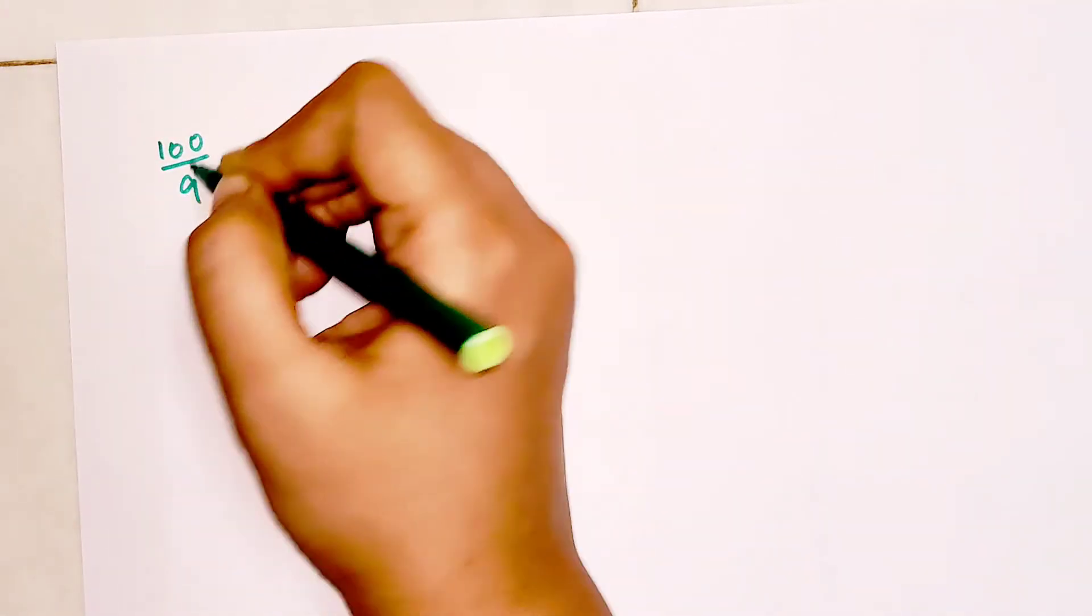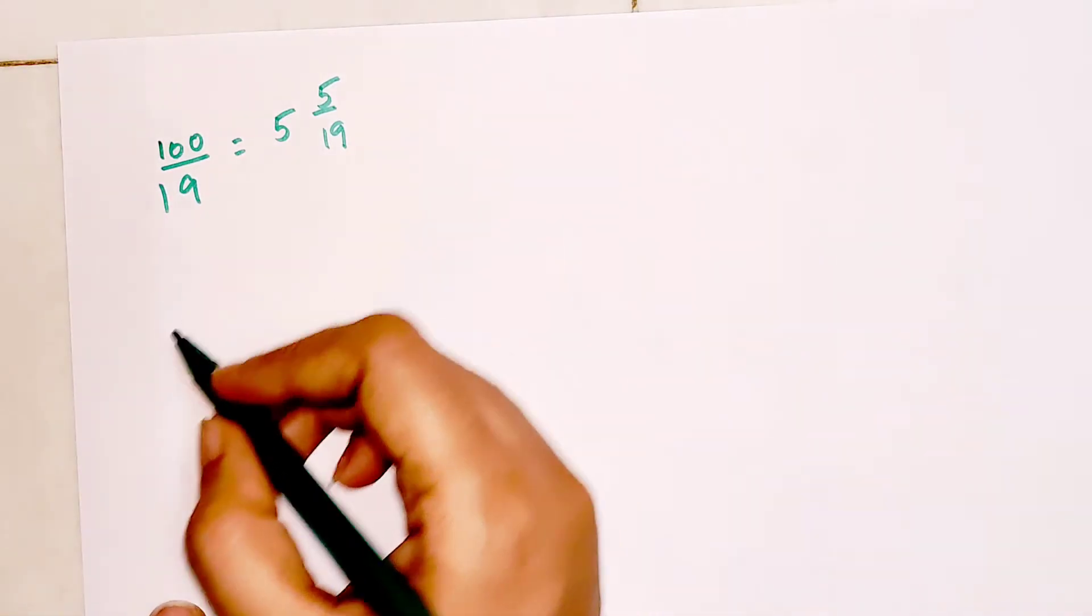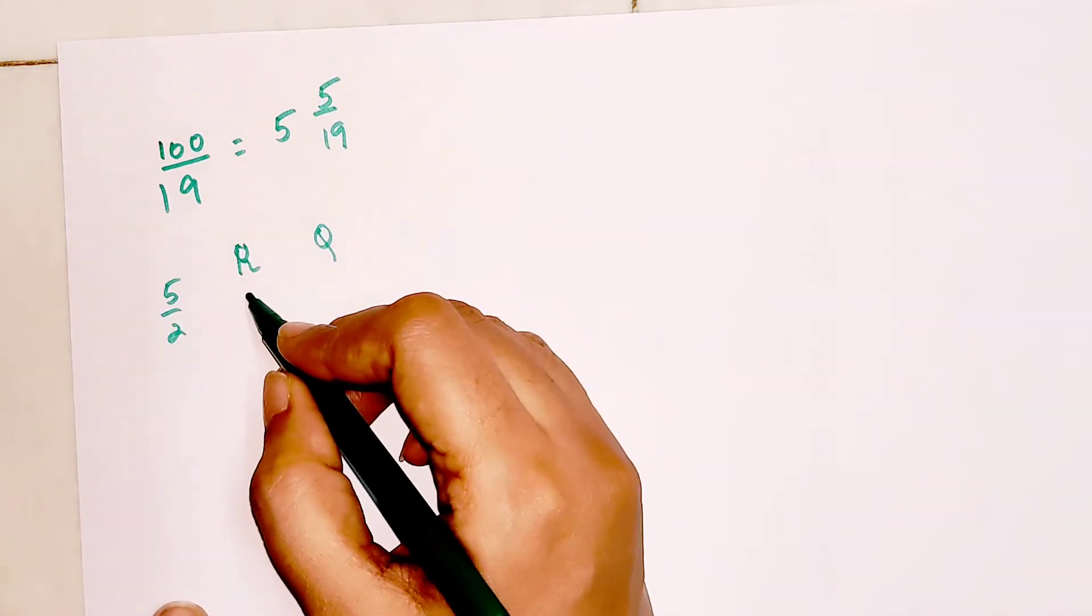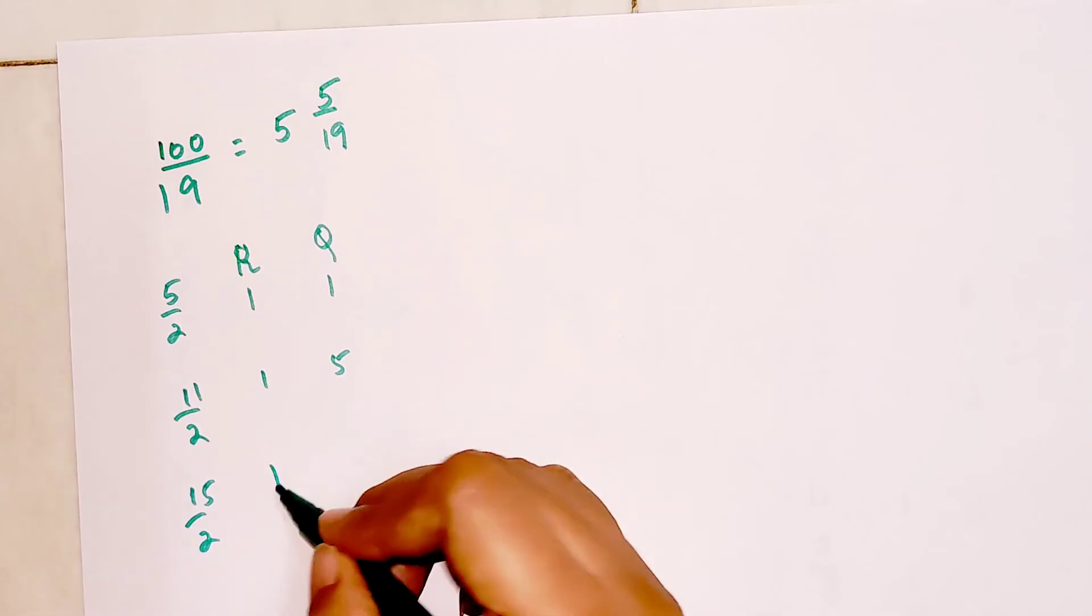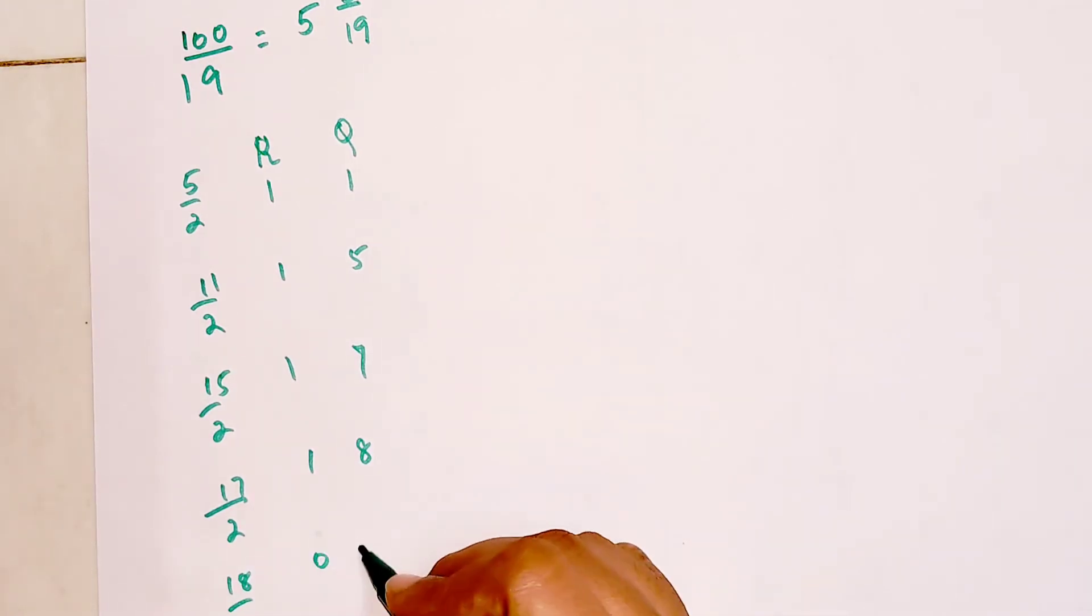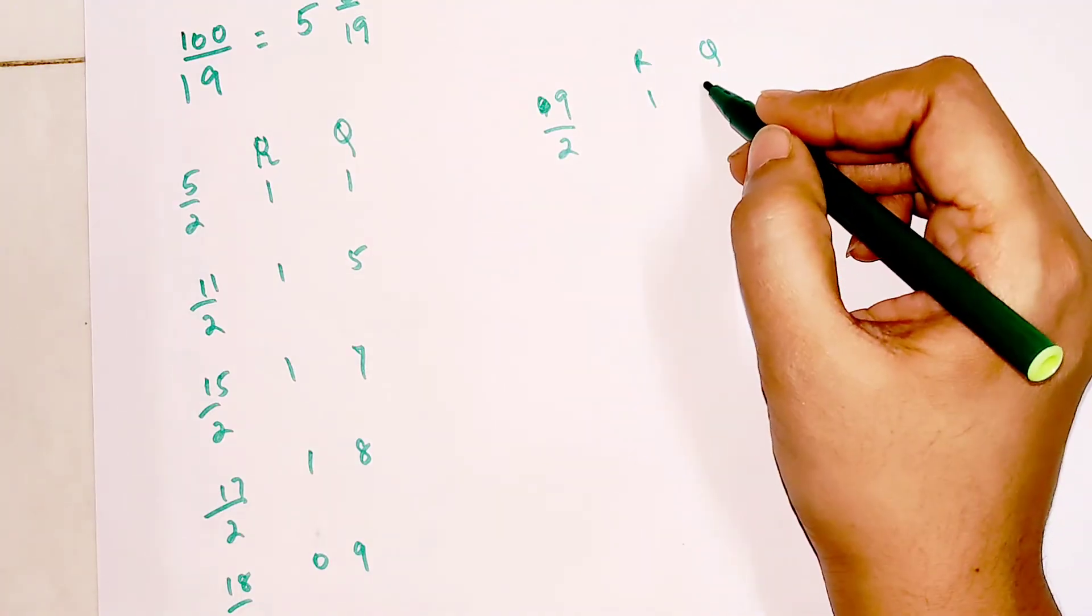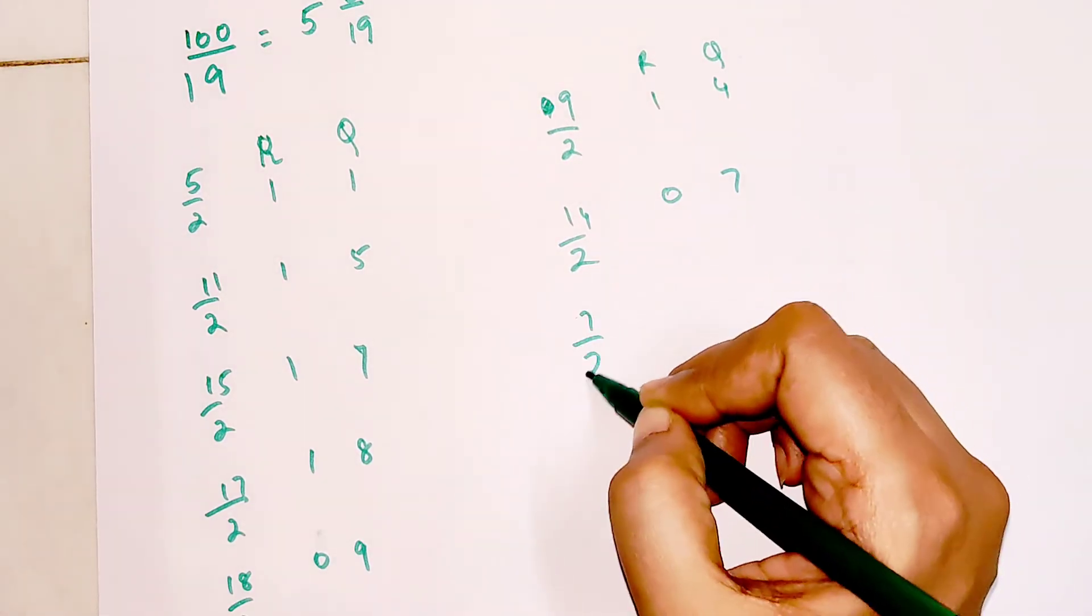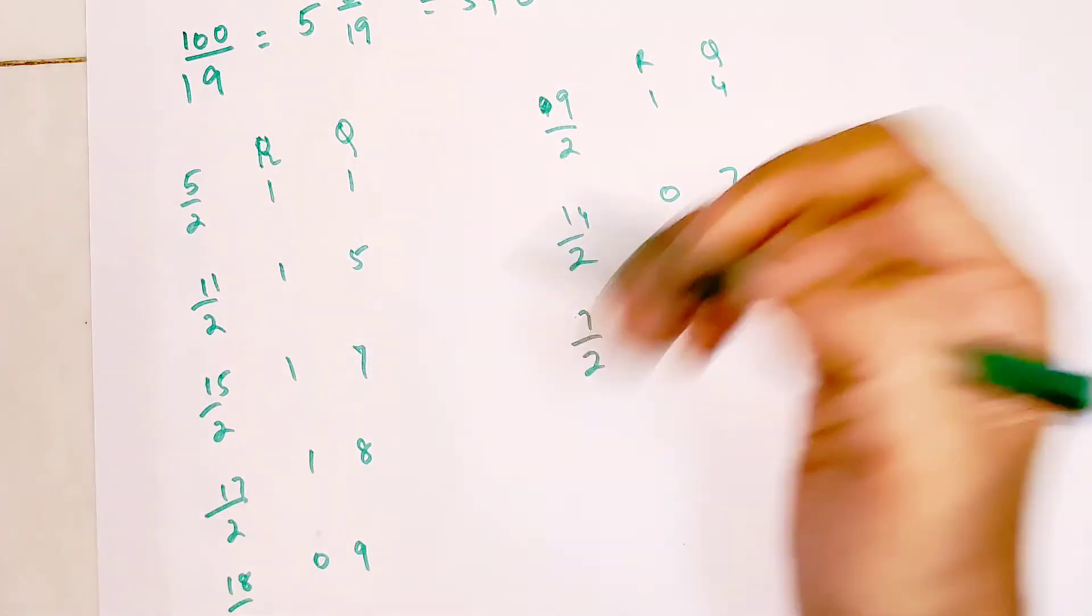Now let's take a bigger number. Let's say 100 divided by 19. 5 times 19 is 95, and you're left with 5 as remainder. Take 5 divided by 2, remainder is 1, quotient is 2. Then 11 divided by 2, again 1 and 5. Then 15 divided by 2, again 1 and 7. Then 17 divided by 2, again 1 and 8. Then 18 divided by 2 gets you 0 and 9. Then 9 divided by 2 gets you 1 and 4. Then 14 divided by 2 gets you 0 and 7. Then 7 divided by 2 gets you 1 and 3. Your answer is 5 plus 0.15789473.